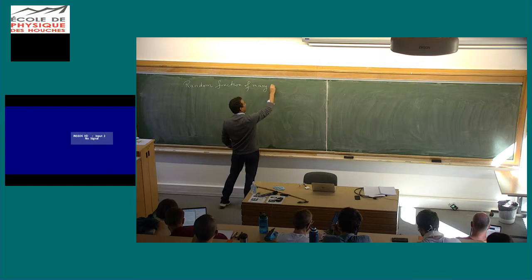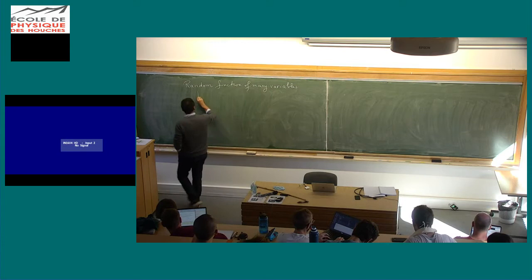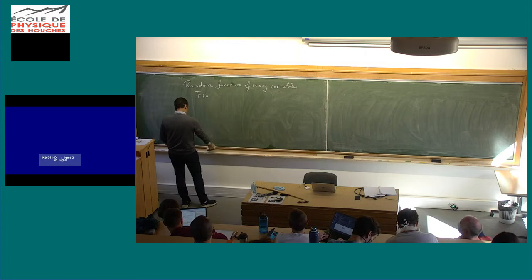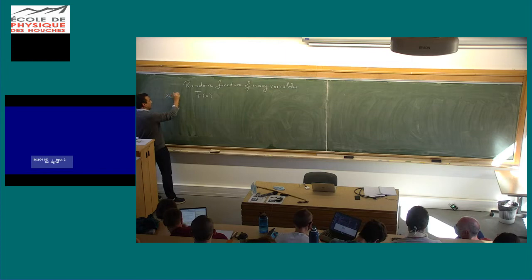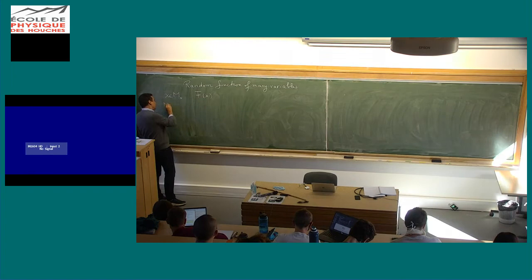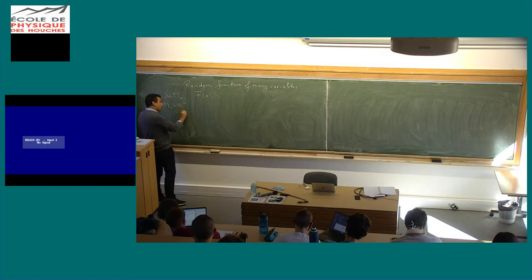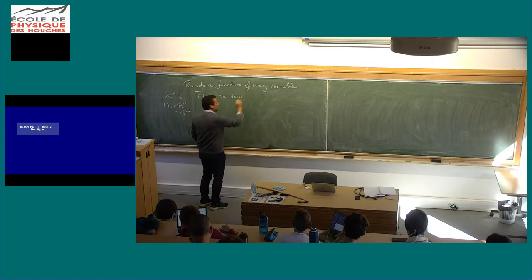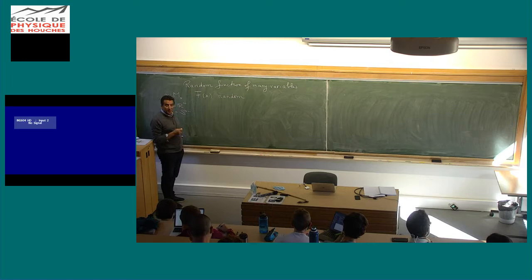You take a function of many variables, f of x. If you're a mathematician you put an omega to say it's random, but I won't do that — you'll remember that it's a random thing. X will be in a manifold of dimension n. This could be R^n, this could be the sphere, this could be whatever you want. Think of the manifold as R^n, or it could be the sphere of dimension n minus one. This f is a random function, and I just want to find its minimum — or its maximum. That's a very natural problem.